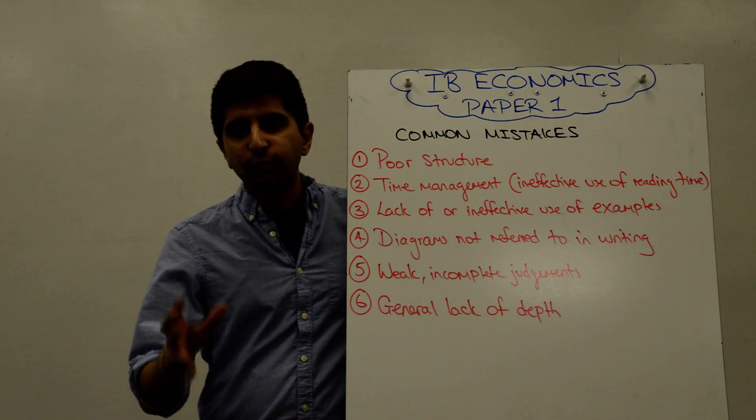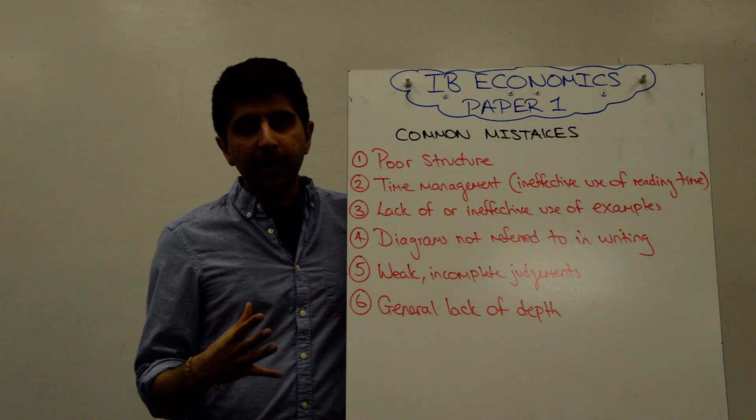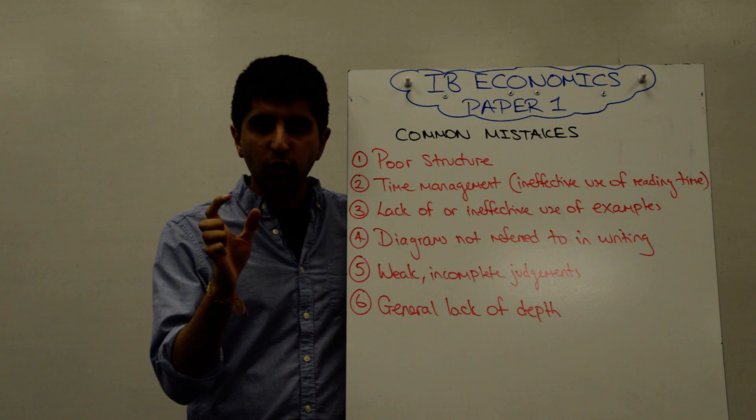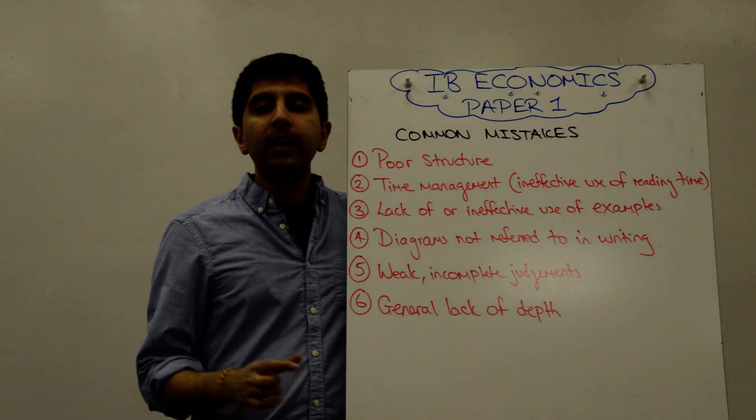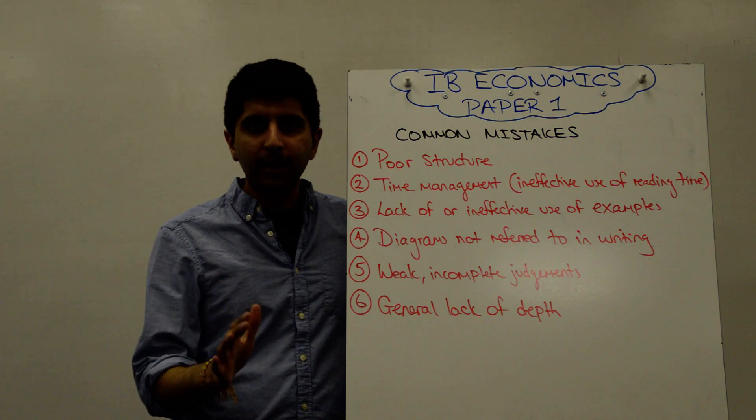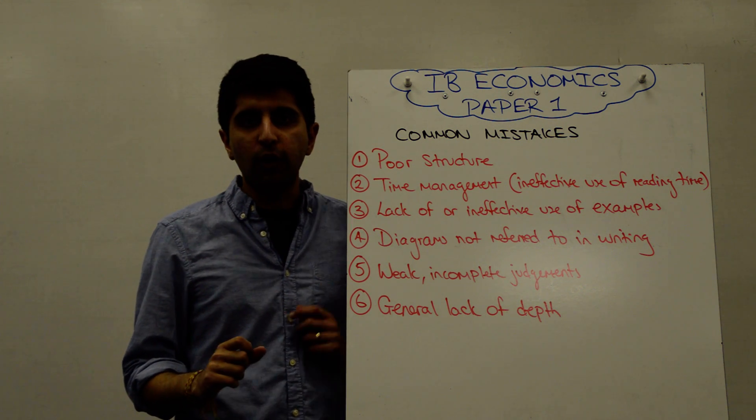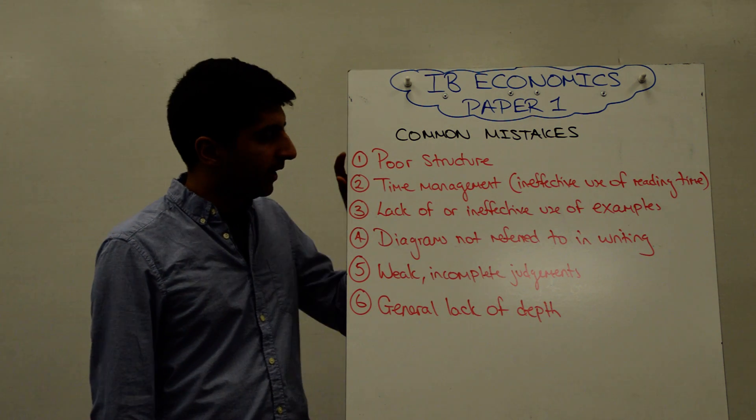Poor structure is often at the heart of problems. 10 markers are normally easy to structure, but 15 markers in particular are often structured poorly. A key criterion in the top level of 15 markers requires good organization and logical structure. If you mess that up, you immediately cannot hit the top marks. Following my videos on 15 marker structure will help overcome these issues.